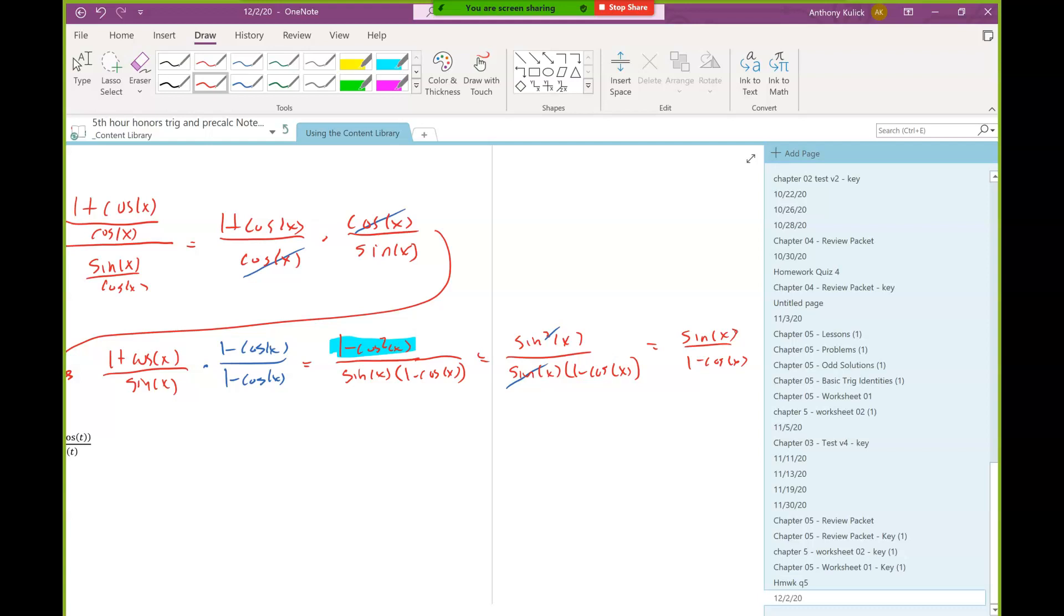And if we remember, this is like a modified version of that first Pythagorean. And now we can reduce the sines and we're there. Haley, does that feel okay with what we did there? Yes, thank you. Yeah, of course. Does anybody have a follow-up on this one before I move on to number 30 from the homework?